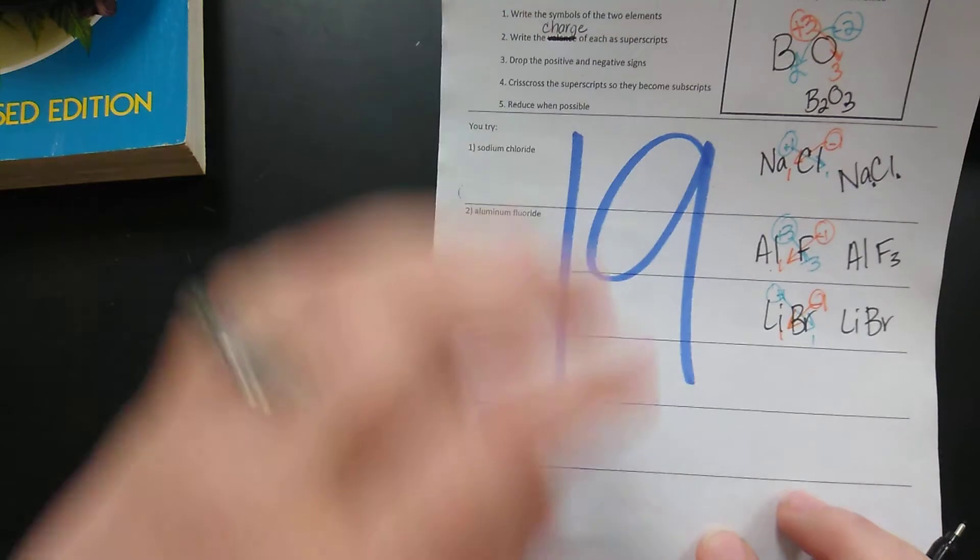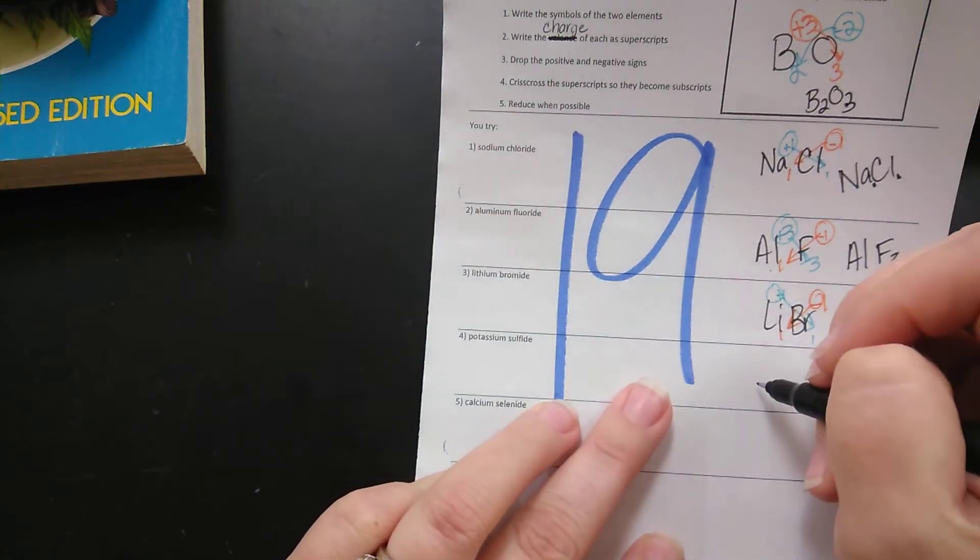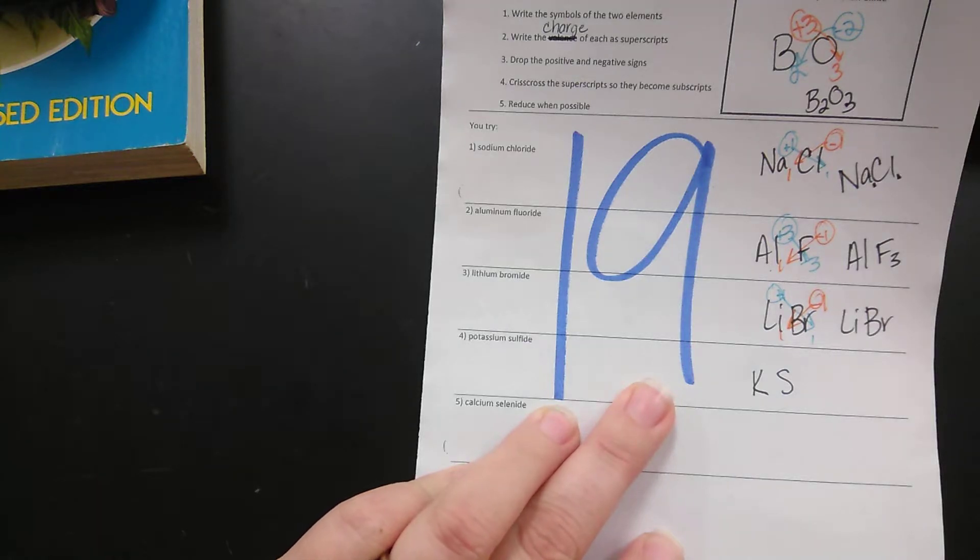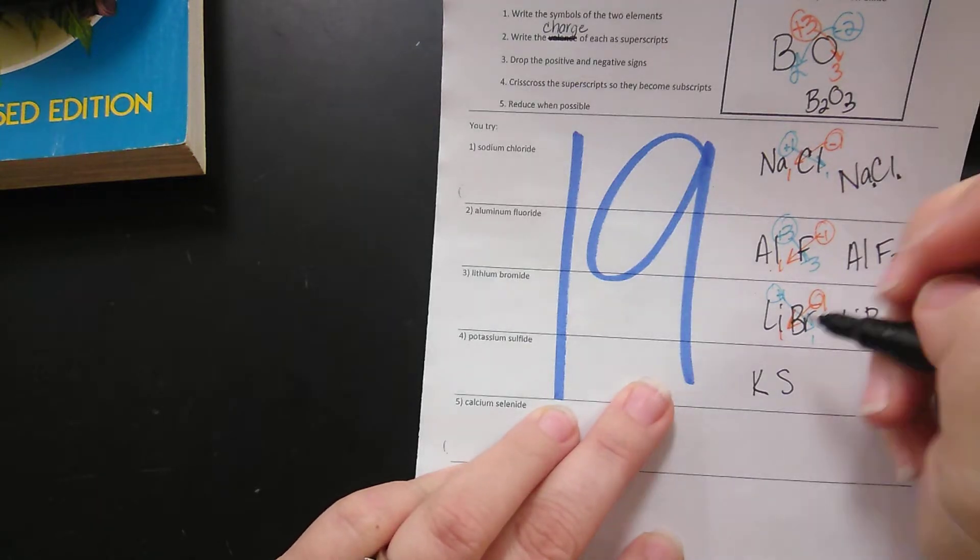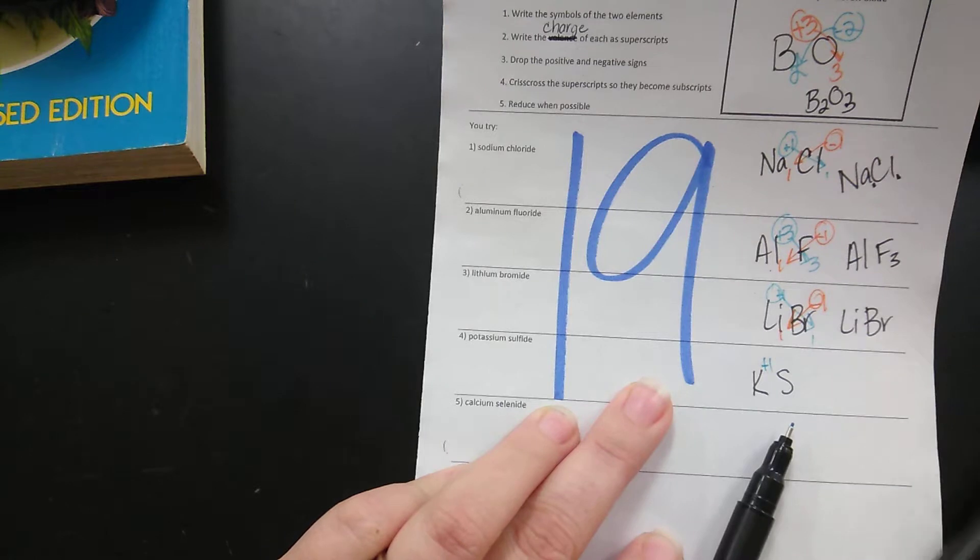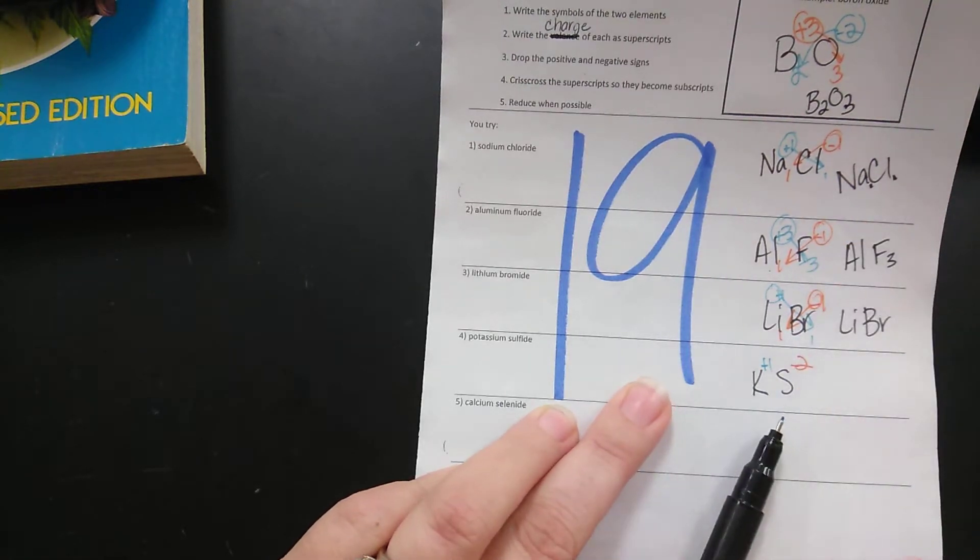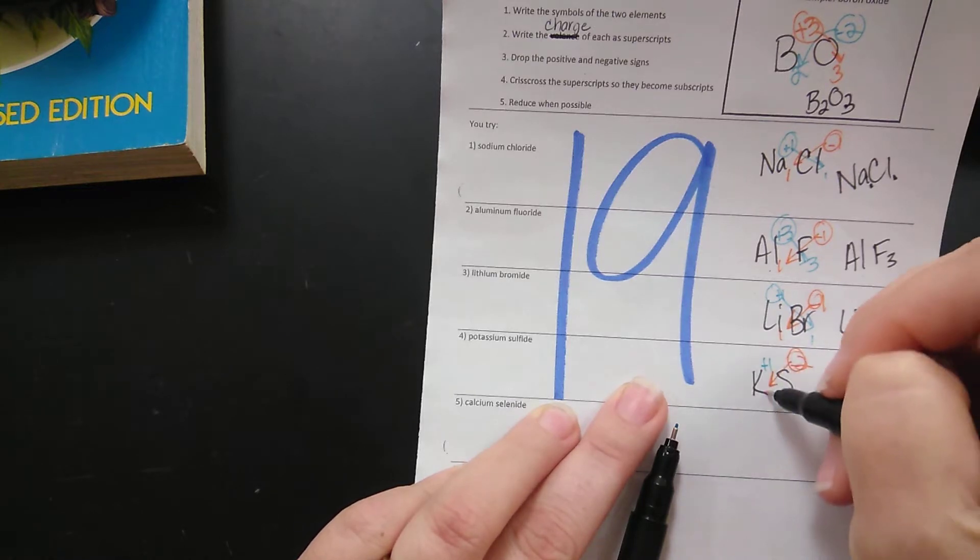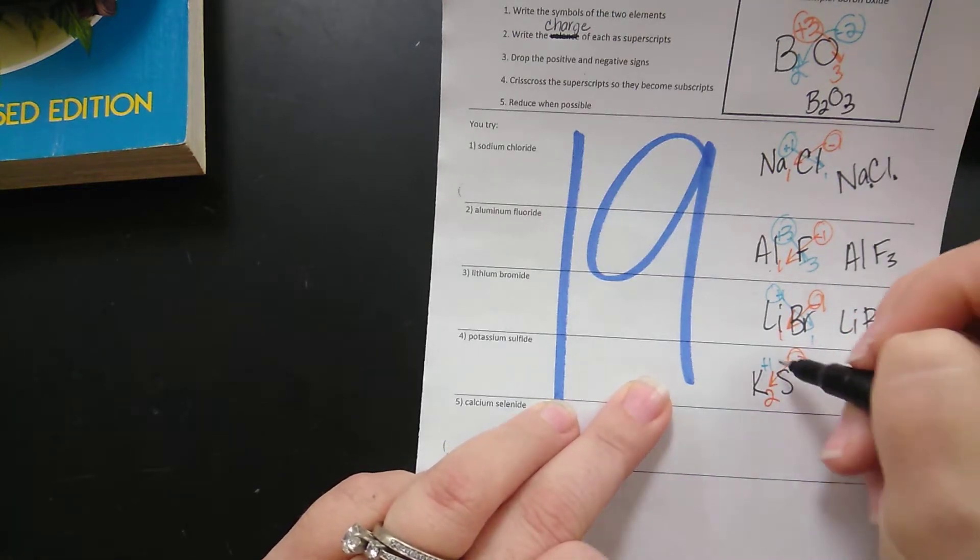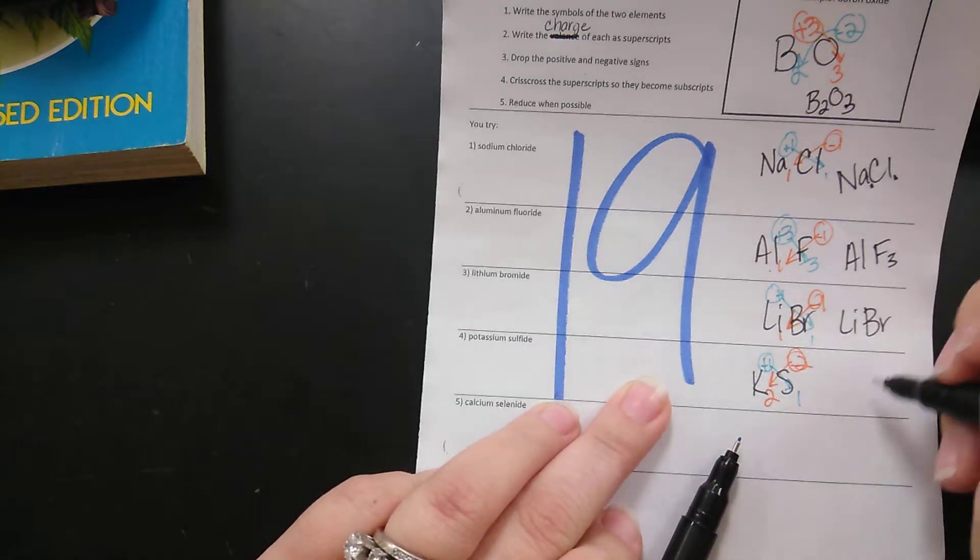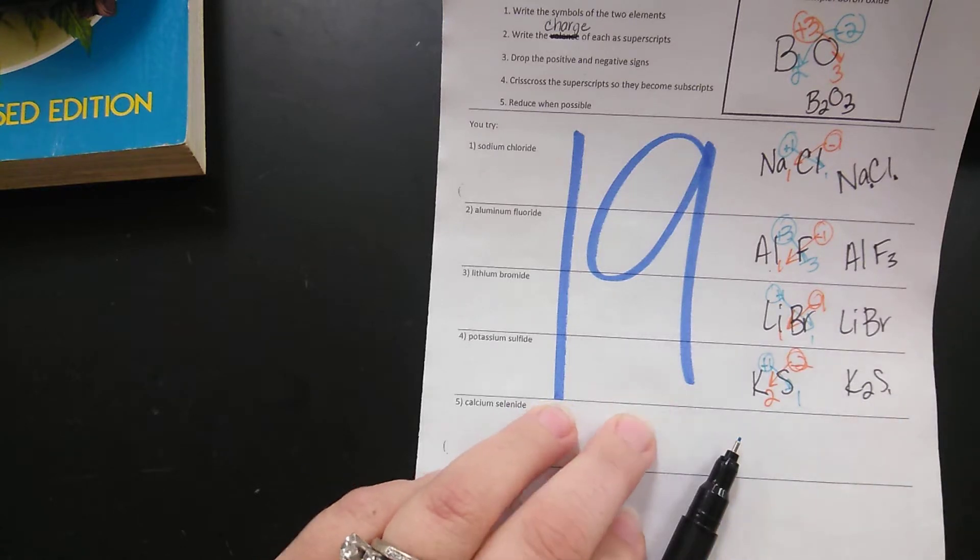Next we have potassium sulfide. Potassium is K and sulfur is S. Potassium is in group one so it has a positive one charge. Sulfur is in group six so it has a negative two charge. We're now going to crisscross. So when potassium and sulfur react together they do so in a two to one ratio.